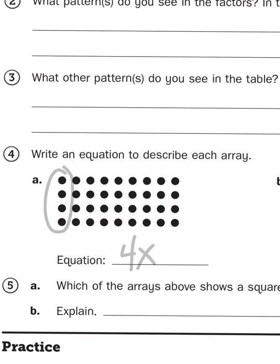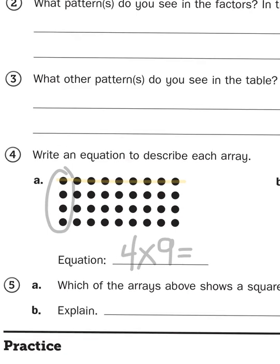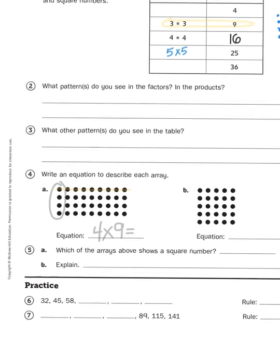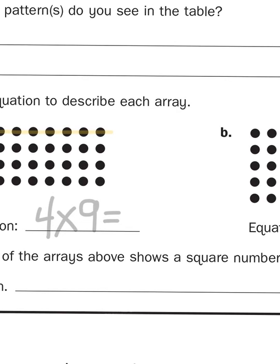So I know that one of my factors is going to be 4. So now I just have to count the dots in each row, like so. 1, 2, 3, 4, 5, 6, 7, 8, 9. Okay, so I have 9 dots in each row. And there are 4 rows, so that makes my problem 4 times 9. So 4 times 9 is going to give me 36. Because if I were to sit and count all those dots, that's what I would come up with.